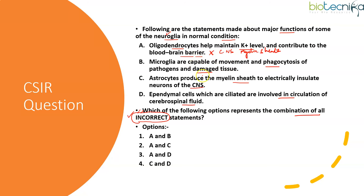Statement B — microglia are capable of movement and phagocytosis of pathogens and damaged tissue — is definitely correct. Microglial cells are part of the central nervous system neuroglial cells. Statement C says astrocytes produce the myelin sheath to electrically insulate neurons of the CNS. However, oligodendrocytes form the myelin sheath; astrocytes form the blood-brain barrier. So statement C is also incorrect.